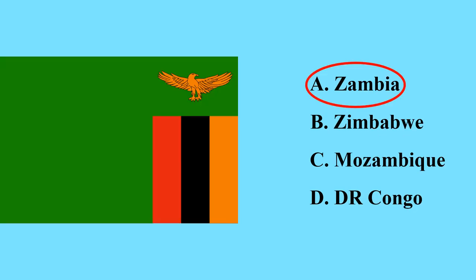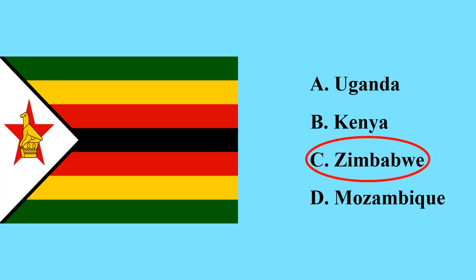This is the flag of Zambia — it is a landlocked country in Africa. This is the flag of Zimbabwe, another country in southern Africa. If you like this video, please share, like, and comment. If you are new to this channel, please subscribe. Thank you very much for listening!